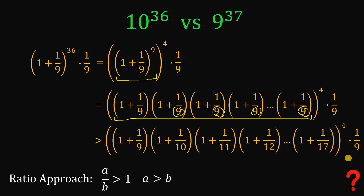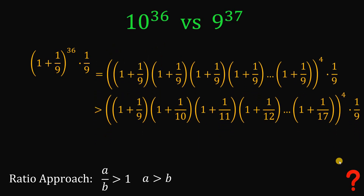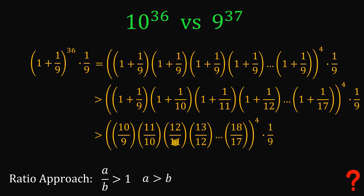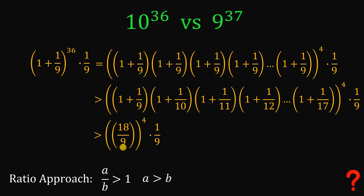The reason we choose the power of 9 is this: 1 plus 1 over 9 gives us 10 over 9; 1 plus 1 over 10 is 11 over 10; 1 plus 1 over 11 is 12 over 11; 1 plus 1 over 12 is 13 over 12; all the way down to 1 plus 1 over 17 is 18 over 17. When we multiply all these fractions, the numerators and denominators cancel telescopically — 11 over 11 is 1, 12 over 12 is 1, and so on — leaving just 18 over 9, which equals 2.